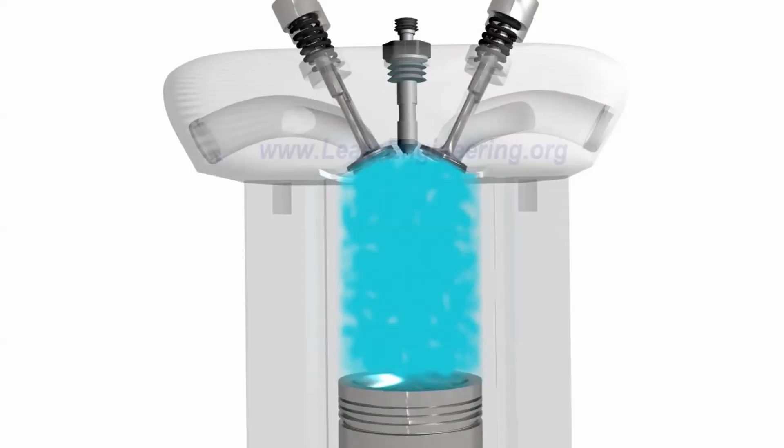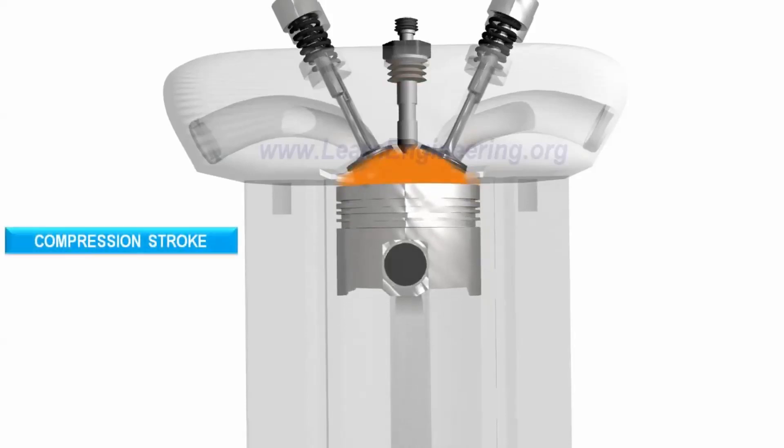During the return stroke, inlet and exhaust valves are closed, and the air inside the cylinder gets compressed. During the compression stroke, the piston does work on the air. So, the temperature and pressure of the air will rise to a level which is higher than the self-ignition value of the diesel.